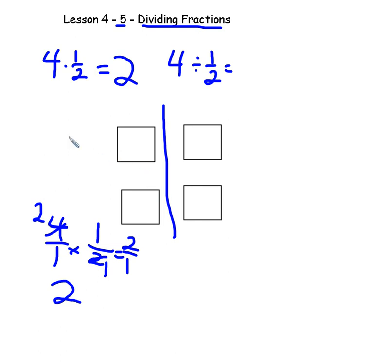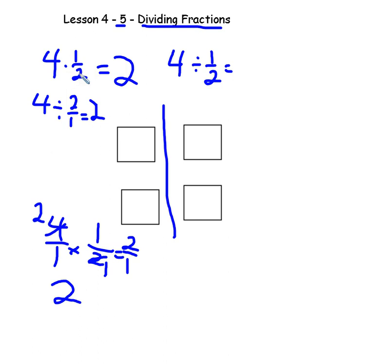Now, the inverse operation: 4 times 1/2 equals 4 divided by the inverse of 1/2, which is 2, or 2/1. So 4 divided by 2 is 2. And 4 times 1/2 is equal to 4 divided by 2/1. That's going to help us when we divide.